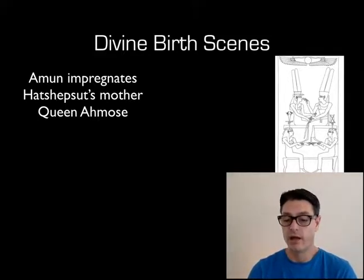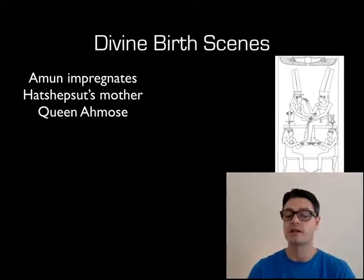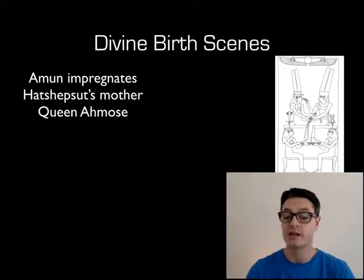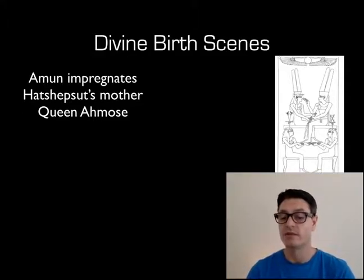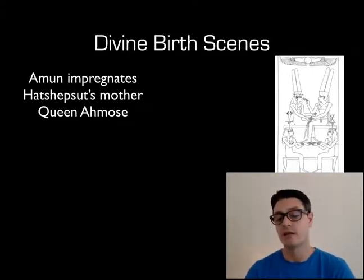The way that happens is that Amun comes down disguised as Hatshepsut's father, Thutmose I, and impregnates Hatshepsut's mother, Queen Ahmose. So Hatshepsut is then physically the daughter of Queen Ahmose and the god Amun.